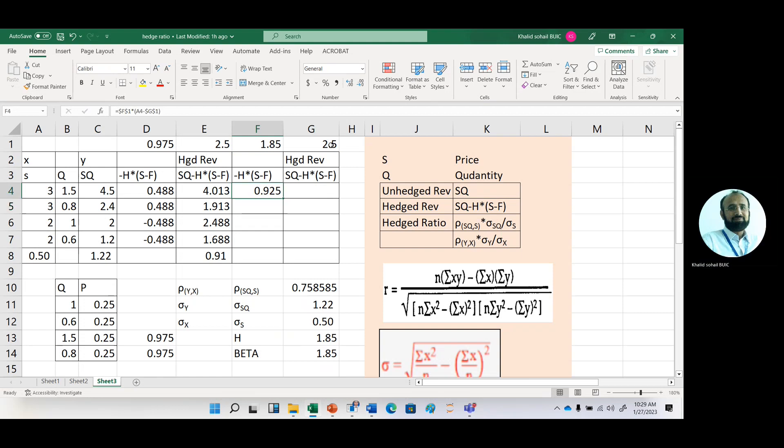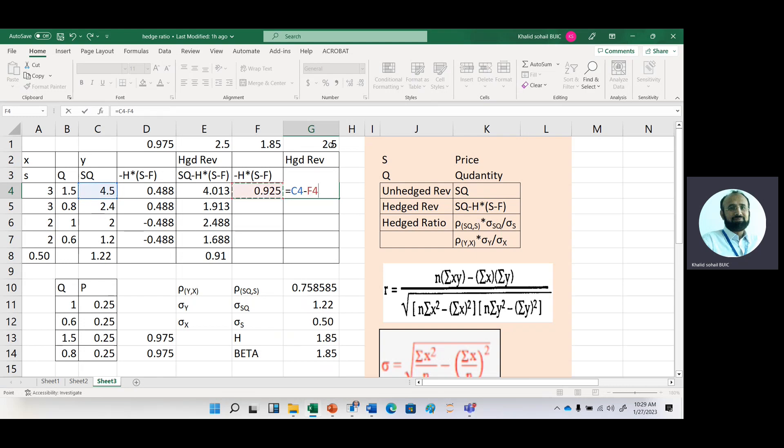And then SQ unhedged revenue and this S minus F with number of contracts. Then just copy it down. And after getting this hedge revenue by using optimal hedge ratio, we calculate its variability. And now you can see that variability is now significantly reduced.